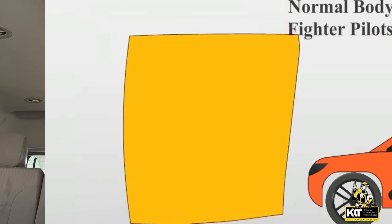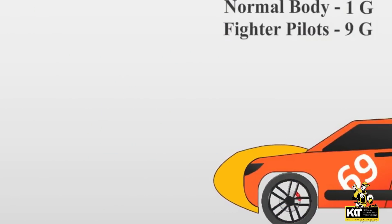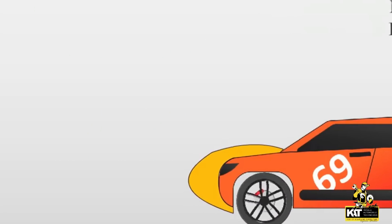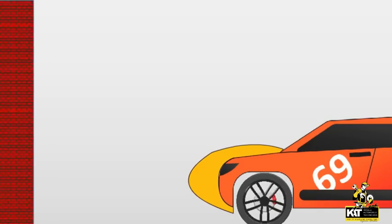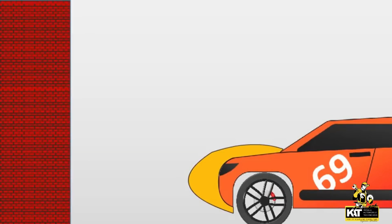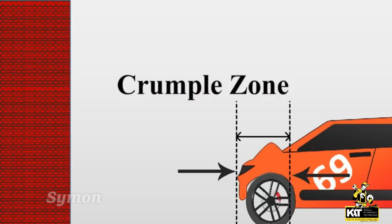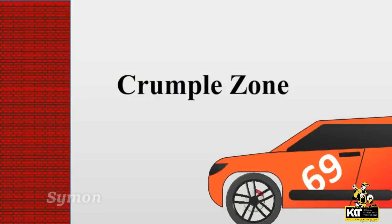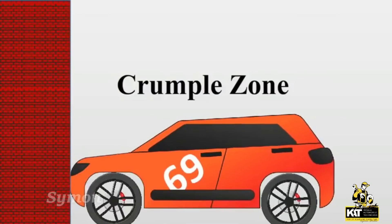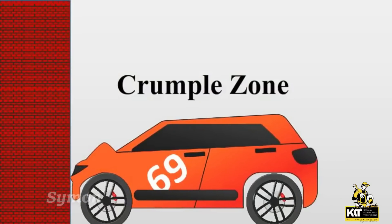If we use a sponge material, we can use the front and rear bumper. That's why we use the crumples. In this case, the G-force is not acceptable beyond 1 to 1.7.